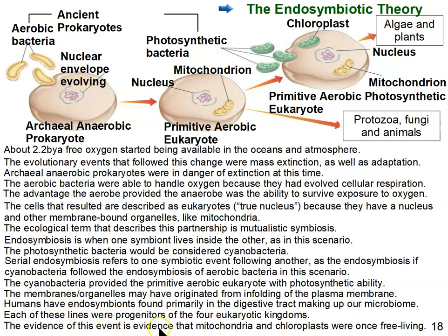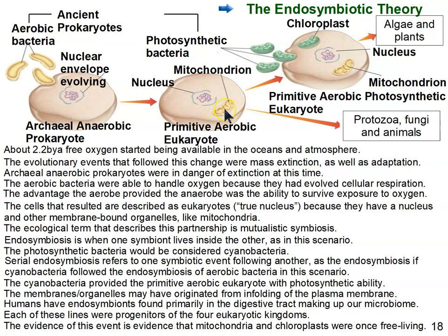The evidence that this happened is evidence that mitochondria and chloroplasts were once free-living. You should know this evidence. Most obviously, they kind of look like bacteria — their size and structure look like bacteria, and when you look at them under the microscope they're about the same size as prokaryotic cells with similar structure. They have their own DNA, which is one of the most important pieces of evidence. No other organelle has its own DNA — mitochondria has its own little ring of DNA, and chloroplasts have their own little ring of DNA.